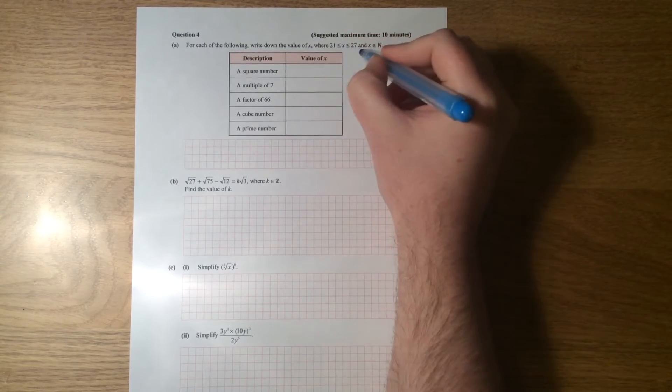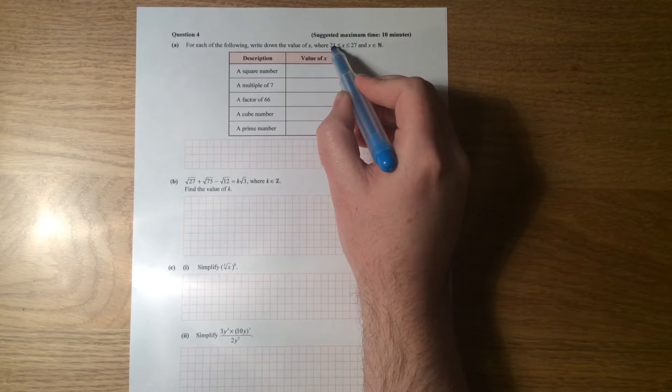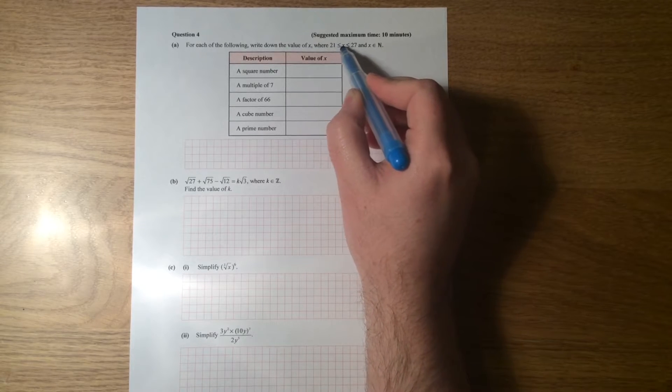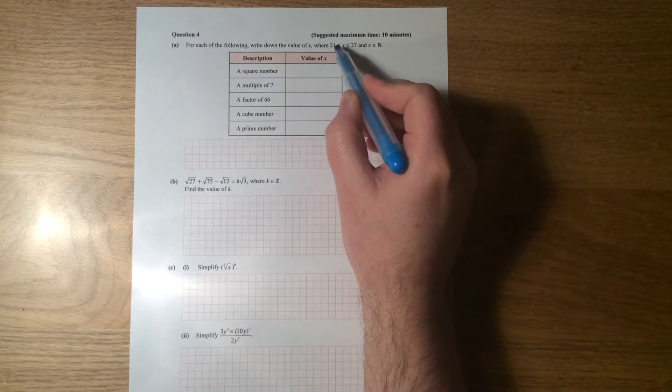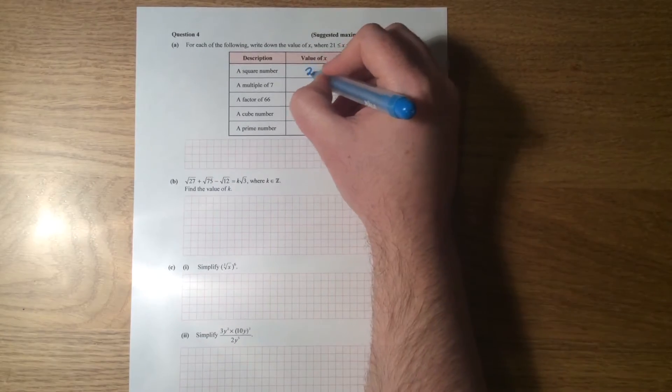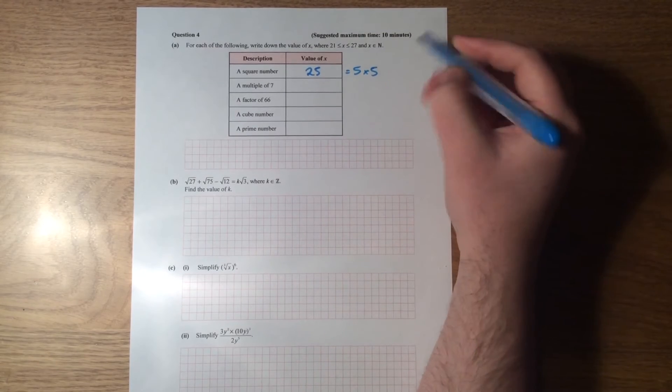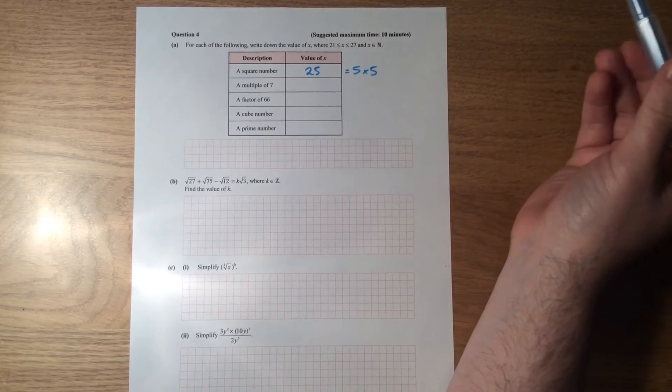Now, make sure you understand what this kind of notation is talking about here. That means anywhere between 21 and 27, because that little line there means less than or equal to, where x is greater than or equal to but less than or equal to 27. So it's between 21 and 27. So a square number between 21 and 27 is 25, because that equals 5 multiplied by 5. So another square number would be 4 multiplied by 4, which is 16. That would be a square number.